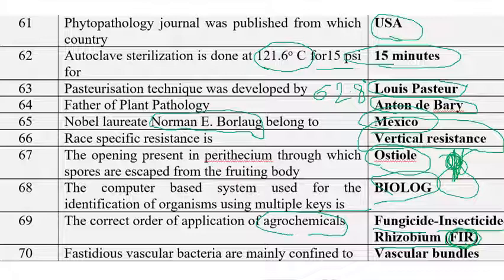Fastidious vascular bacteria are mainly confined to vascular bundles only. They cannot be found in other parts of the plant like leaves. They are especially confined to vascular bundles.